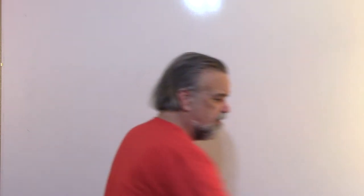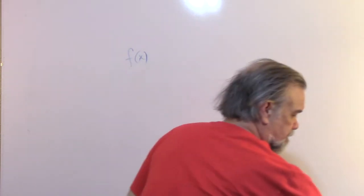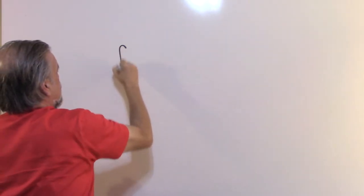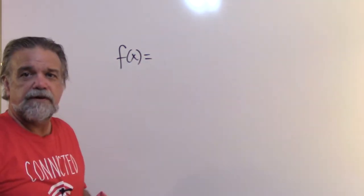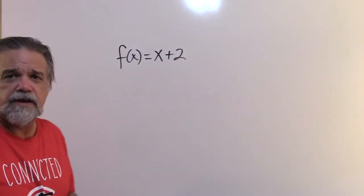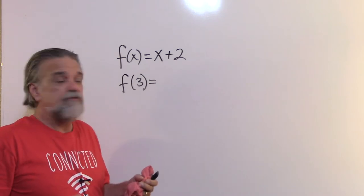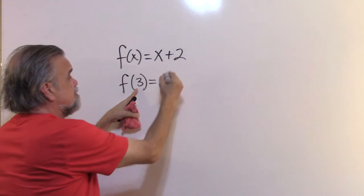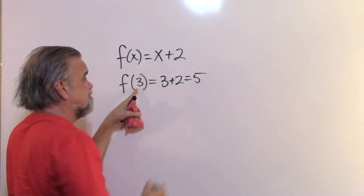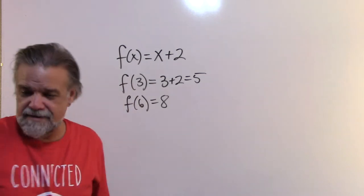Now let's look at function notation. We have f(x) = x + 2. What if I did f(3)? All you have to do is say x is apparently 3, so this is going to be 3 + 2, which is 5. So f(3) = 5, and f(6) = 8.